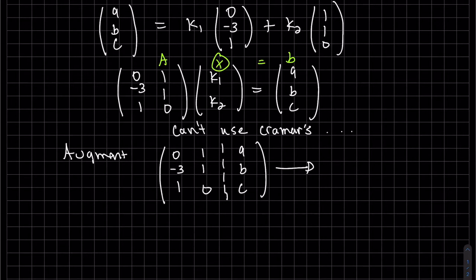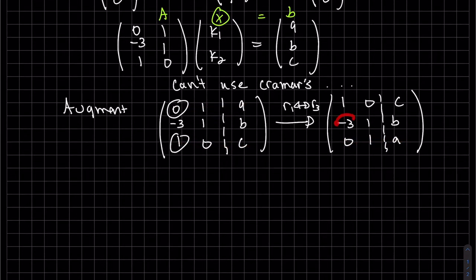Remember we are augmenting with b. My unknowns are my k1 and k2. I like one to be up here, so I'm going to swap that. That's row three and that's row one. I swapped them. Now I'm going to zero this out.